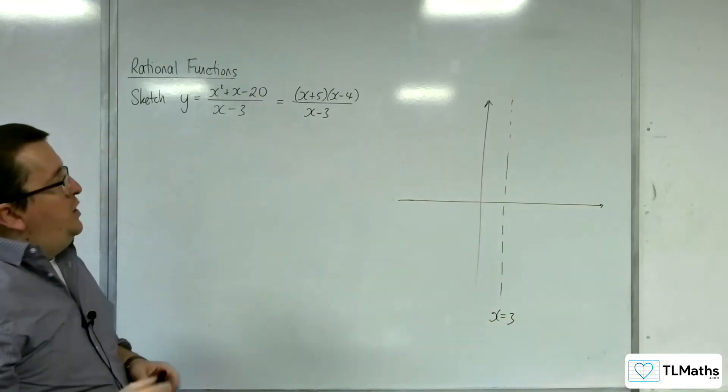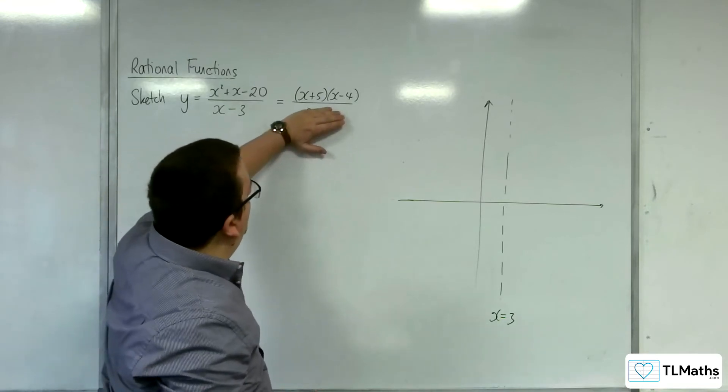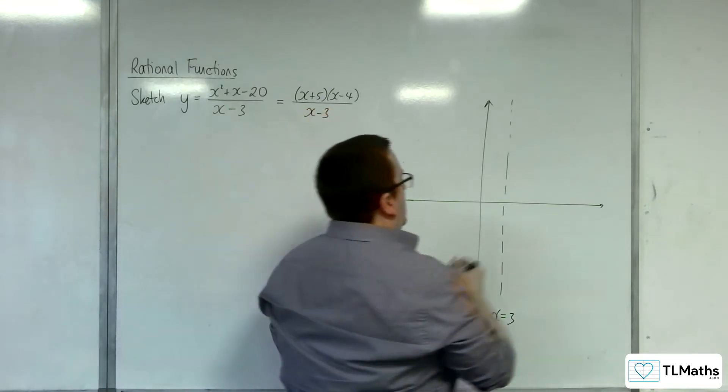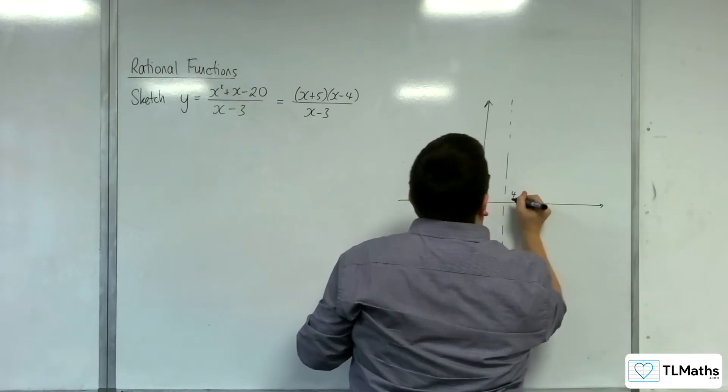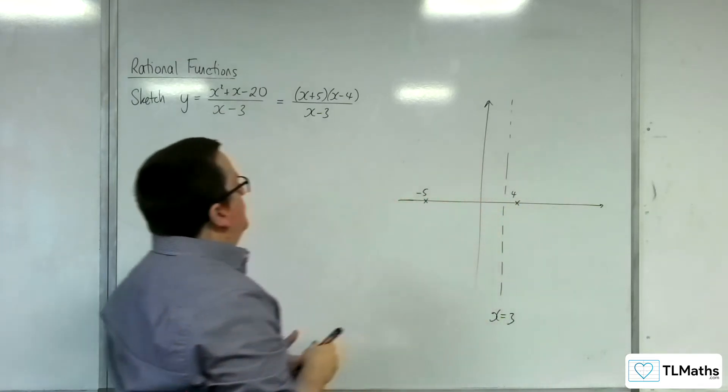Then, where is the numerator 0? Because that's going to be where it crosses the x-axis, so that will be at minus 5 and plus 4. So, we've got 4 and minus 5.